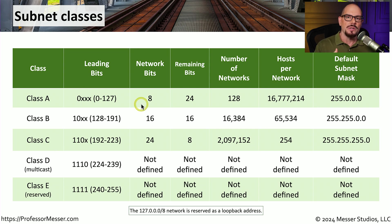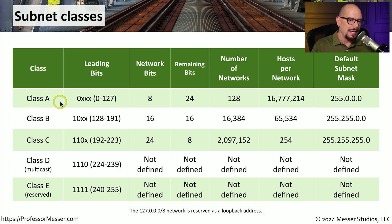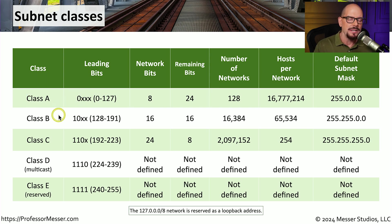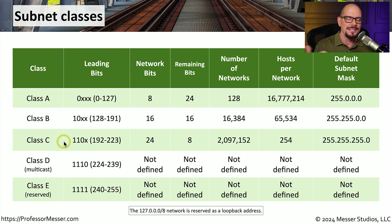If you were to look at that address in binary: if the first bit is 0, it's a class A address. If the first bits are 1-0, it's a class B address. And if the first three bits are 1-1-0, it's a class C address.